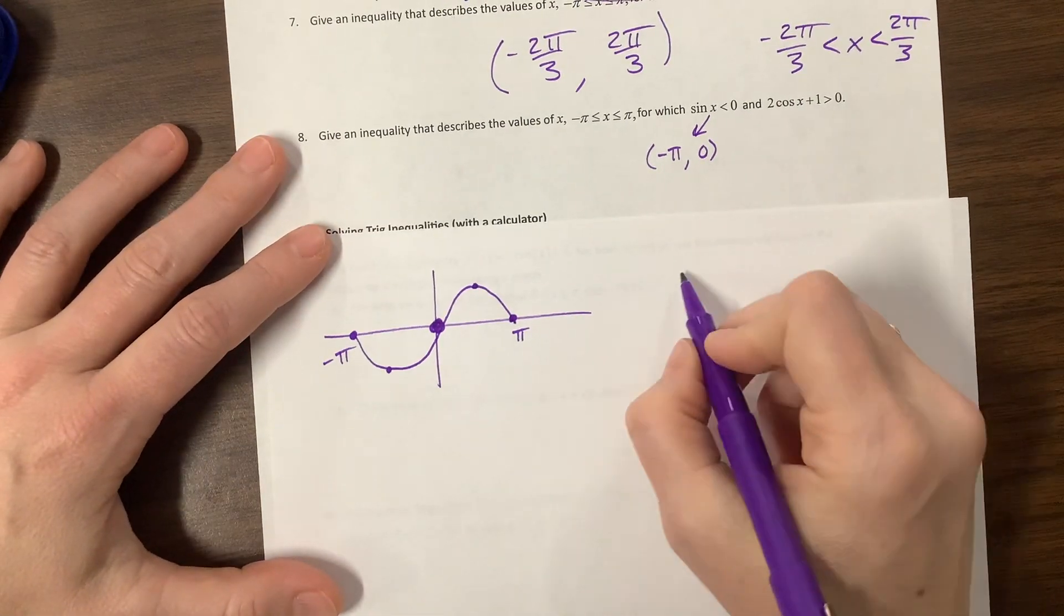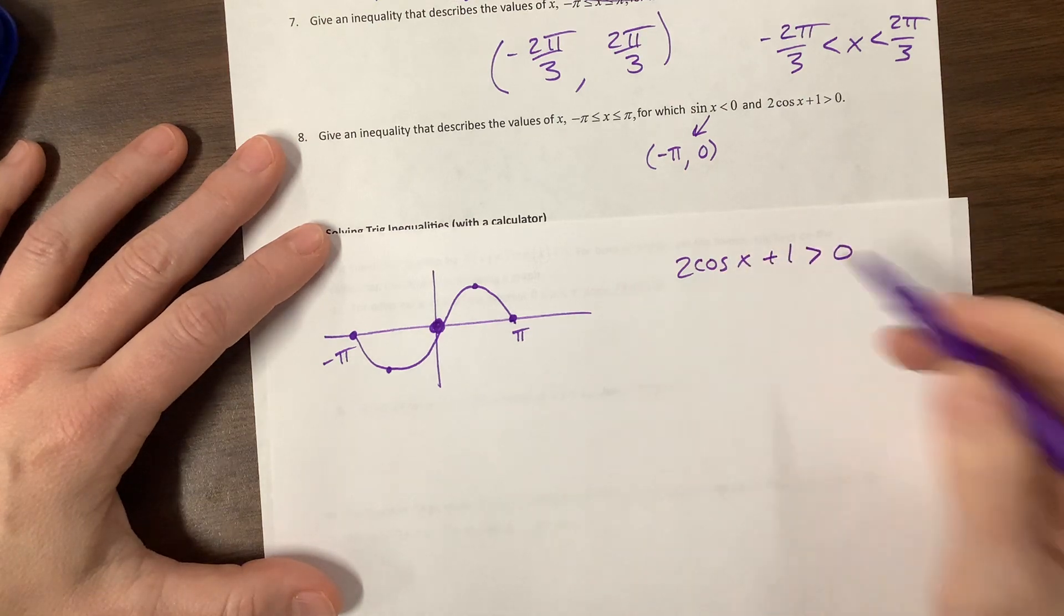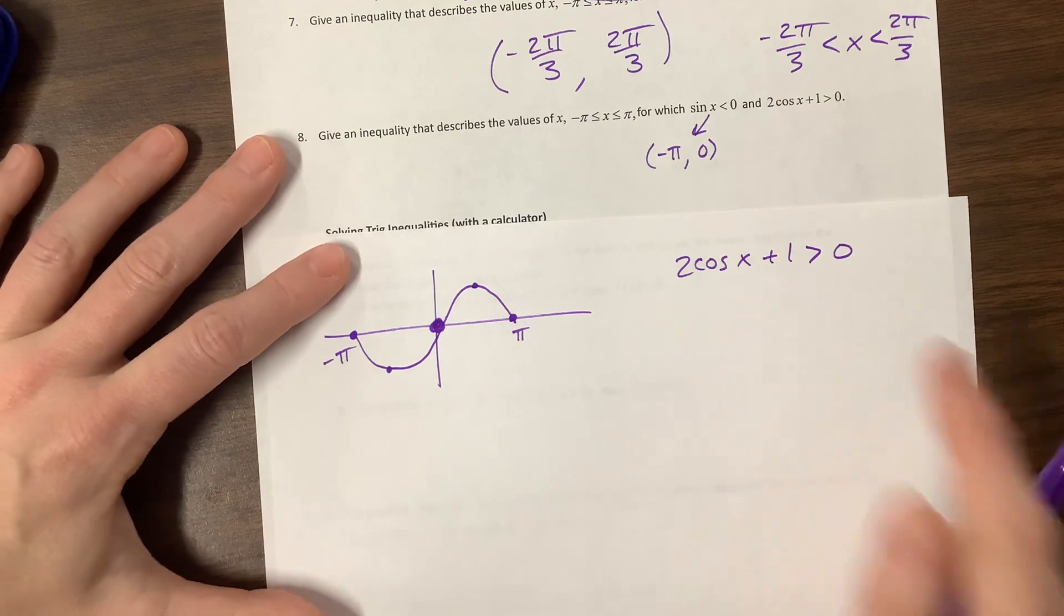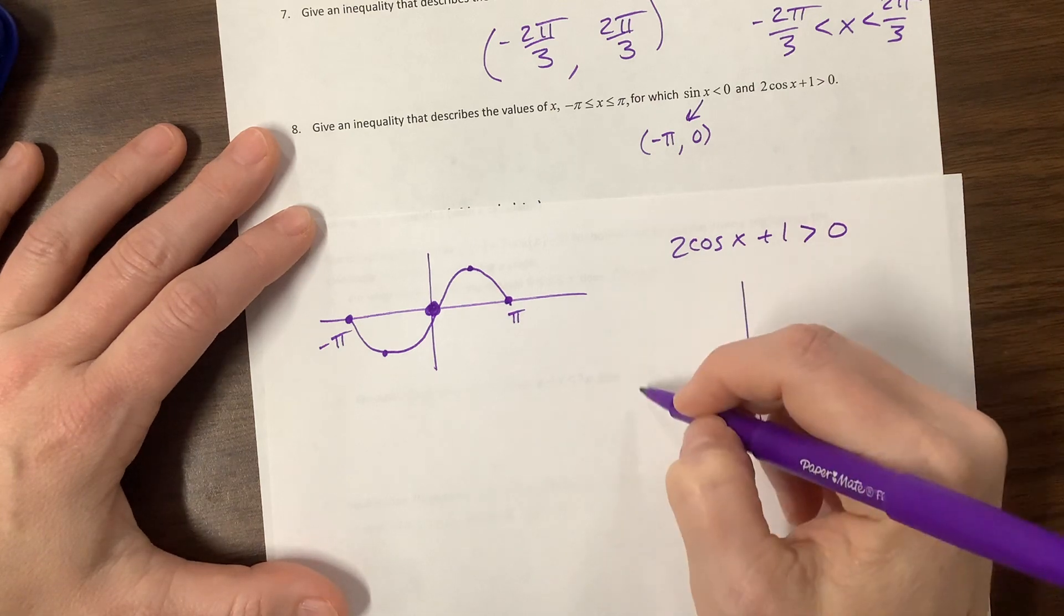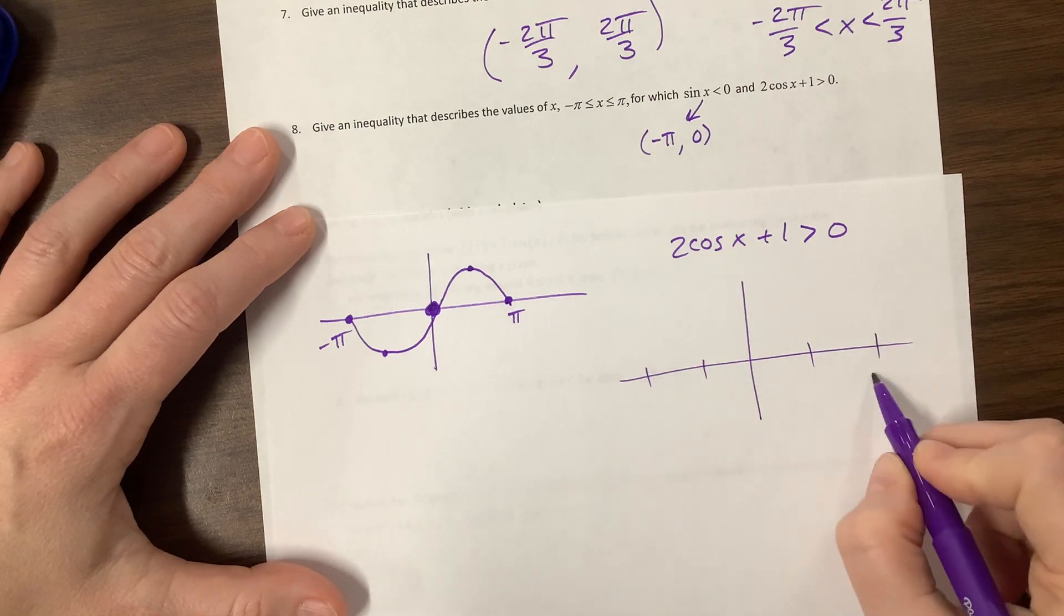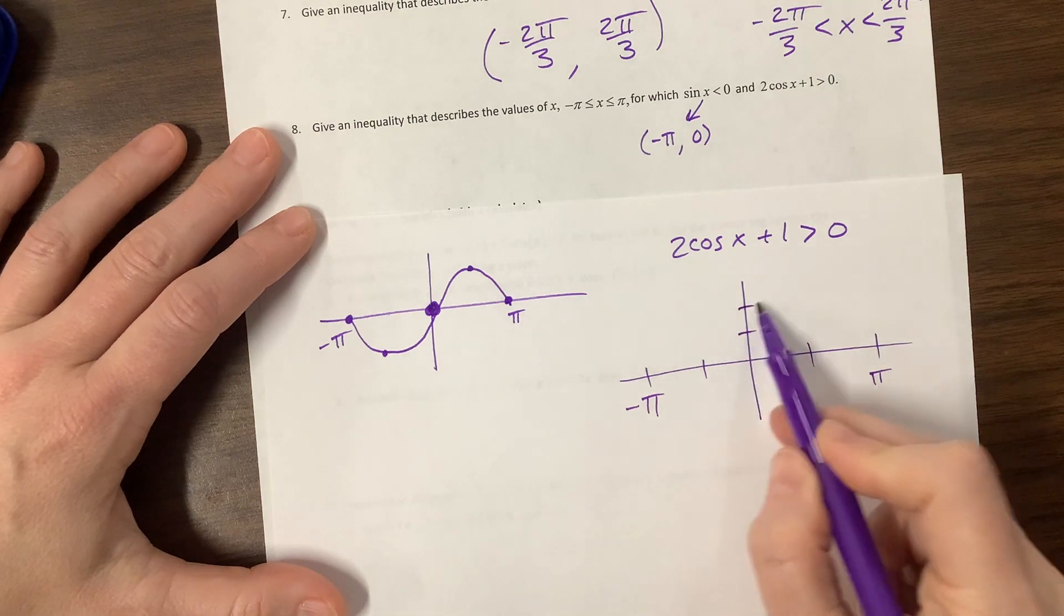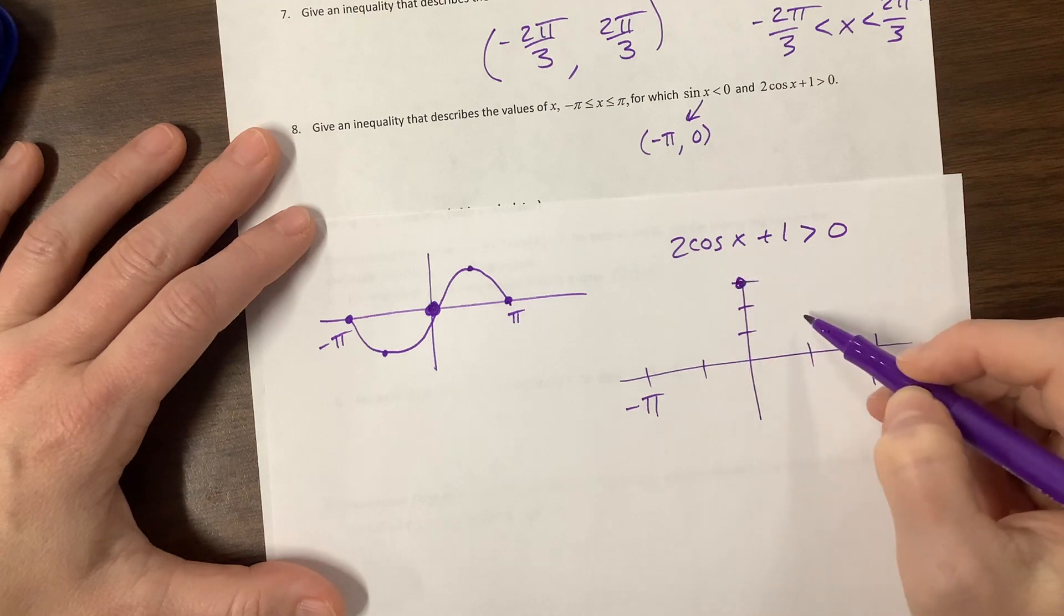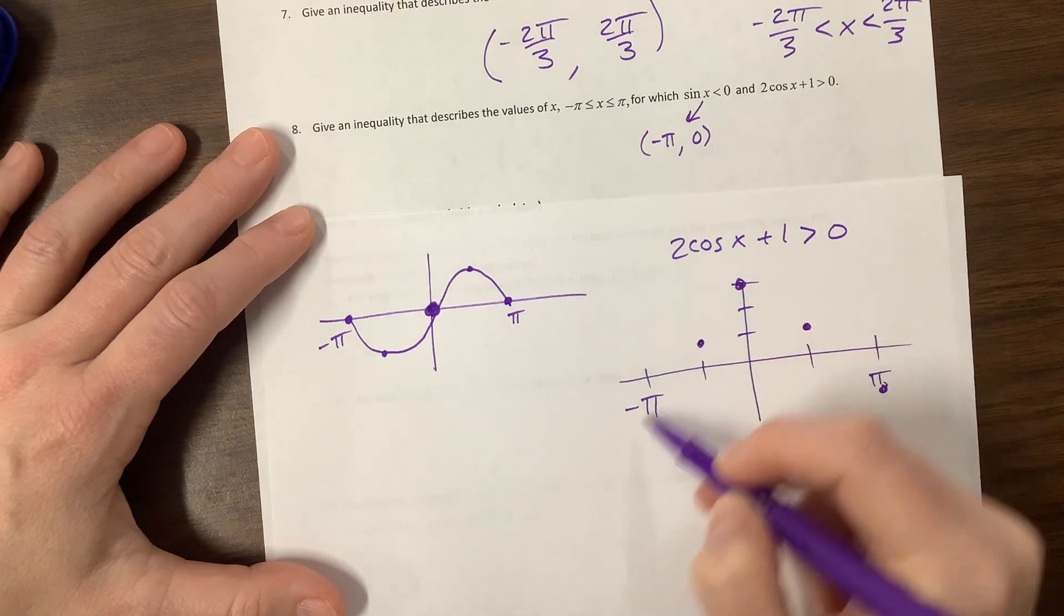And then we have 2 cosine x plus 1 is greater than 0. So this one was the one that we struggled with a little bit ago, and what we found is that, if we graph this curve from, here's negative pi over 2, here's negative pi, here's pi over 2, here's positive pi. We had 1, 2, 3, and so we went up, and then here's the midline, and then we're down, and then here's the midline, and then we were down.